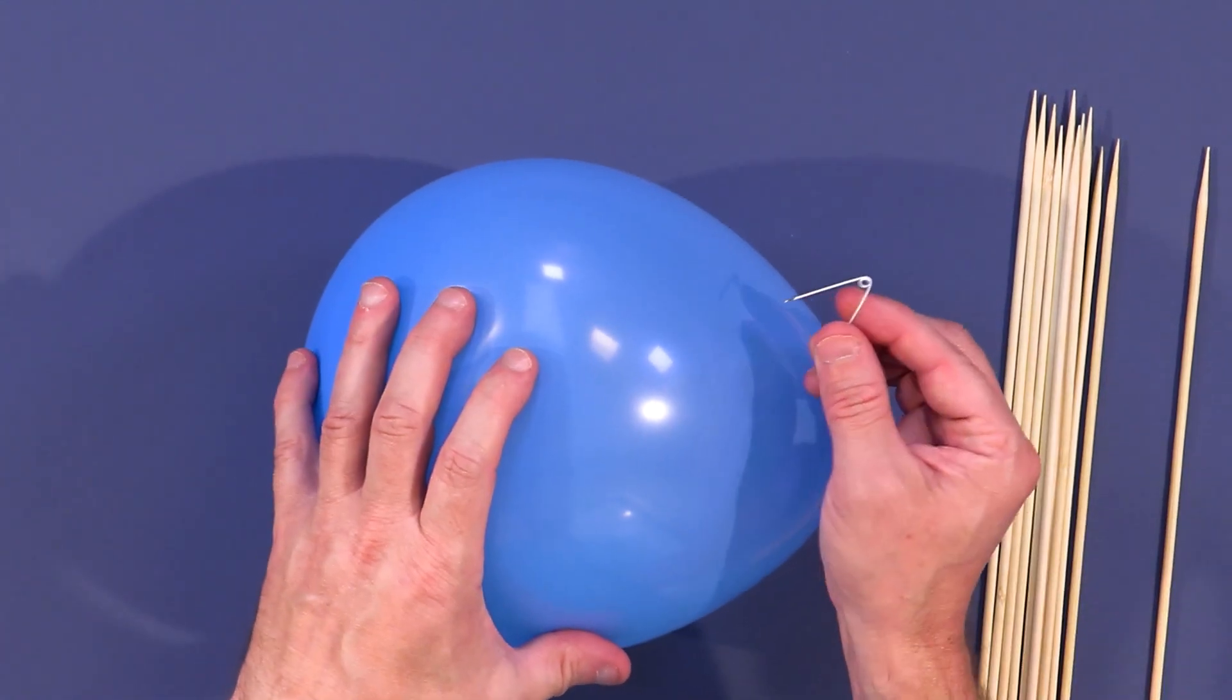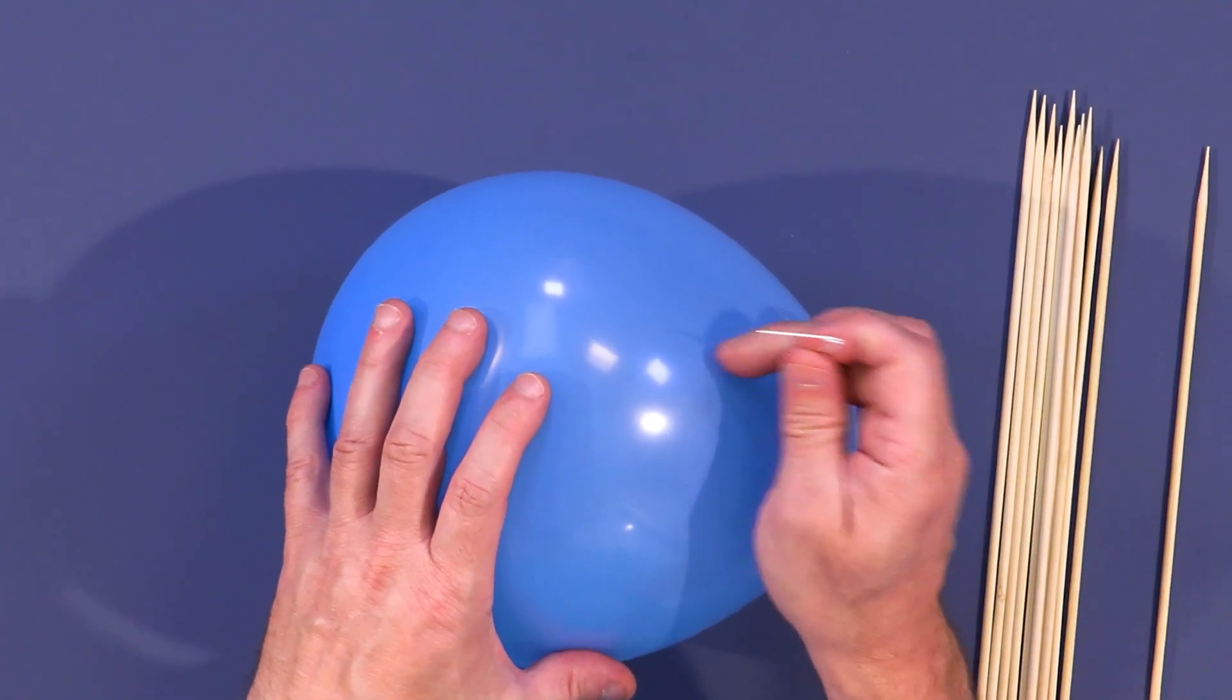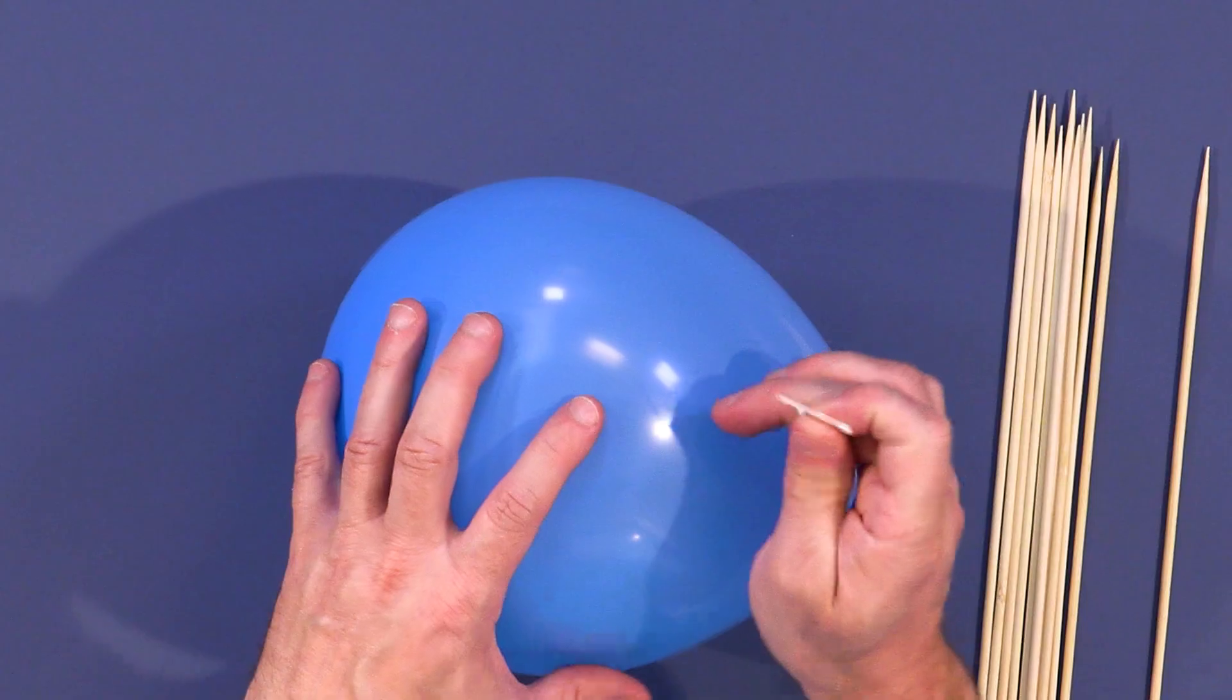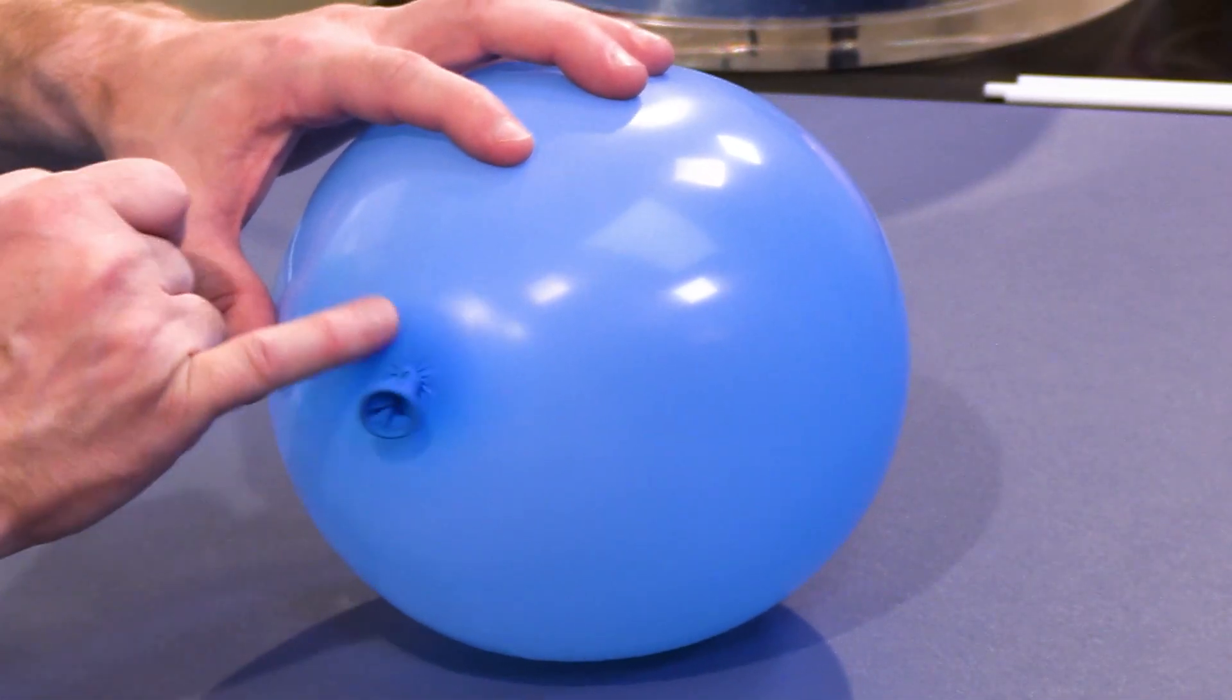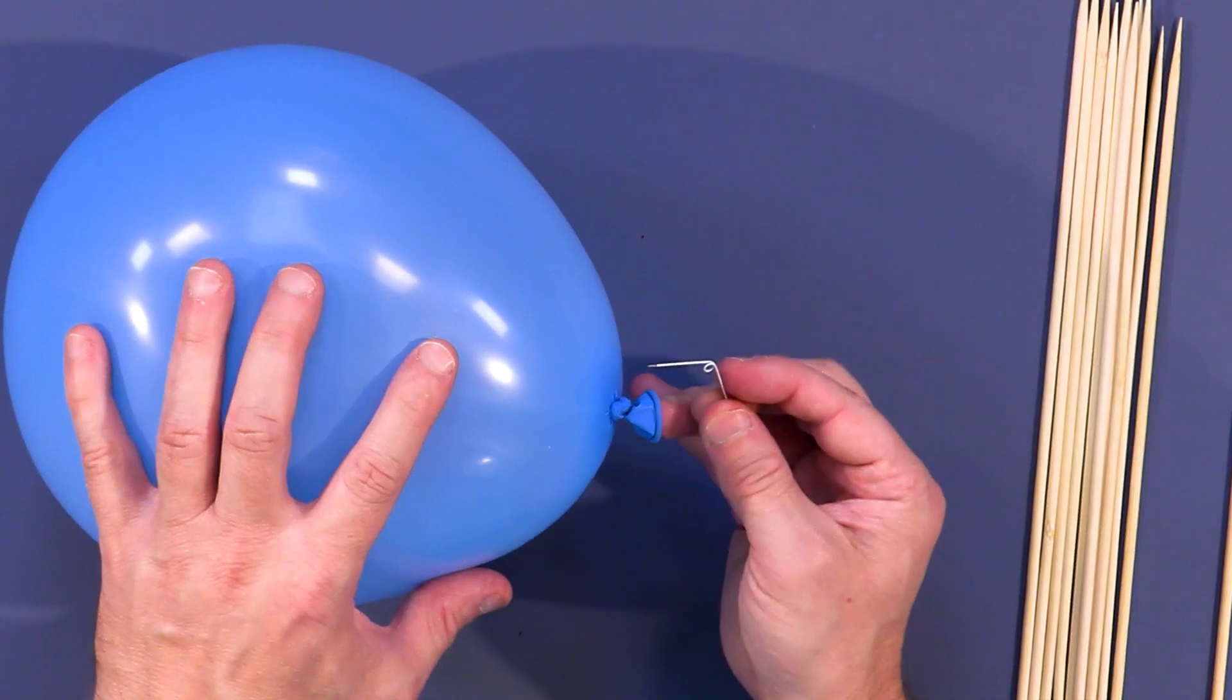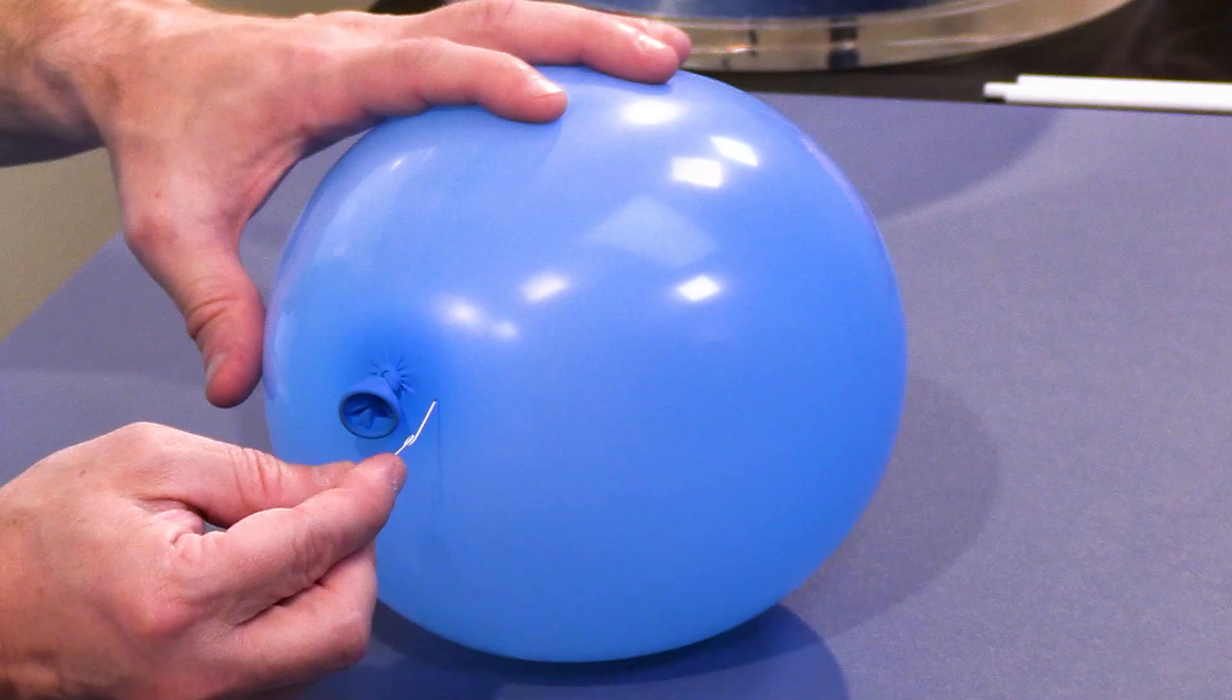But once you put a tiny bit of a stress point on there where you can rupture it in one location, then it rips apart incredibly fast as we saw just a minute ago. You can just sort of see the discoloration of the rubber is a little more dark blue there. So let's see what happens with a needle right here at the end.